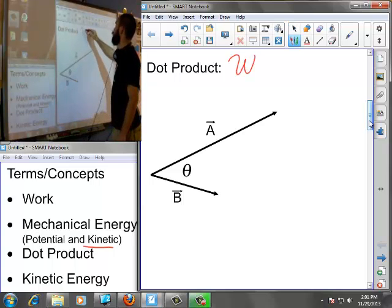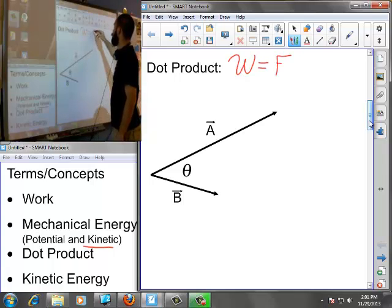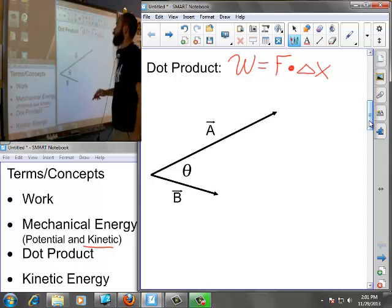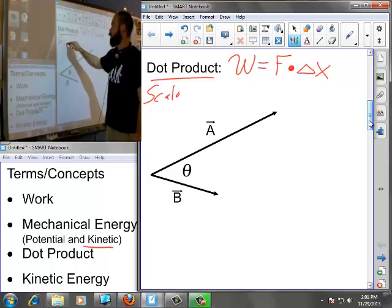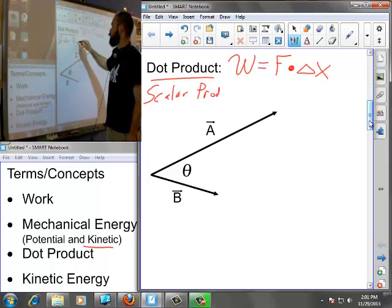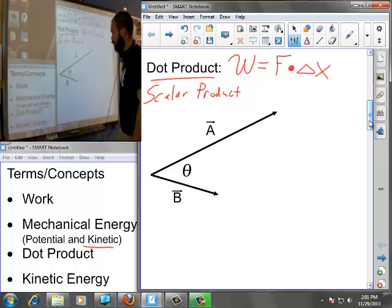The work done by a conservative force is the dot product of that force with respect to displacement. So, work is force dot delta x. It's also referred to as the scalar product because the quantities you get out of this are scalars, and energy is a scalar quantity.